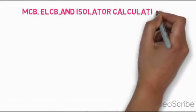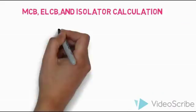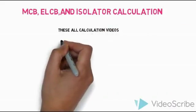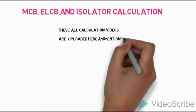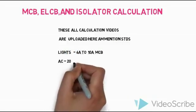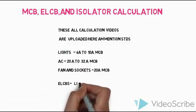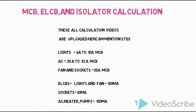Now we fix the MCB, ELCB, and isolator ratings. For ELCB: the light and fan circuit is 100mA, the general circuit is 30mA, and the AC and heater circuit is 100mA. If you want to use an isolator, you can install one accordingly.